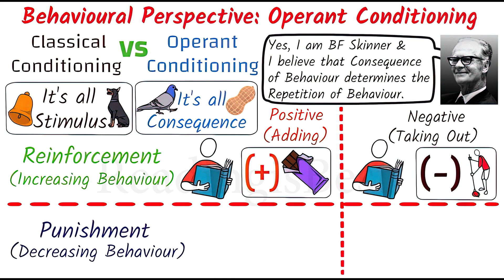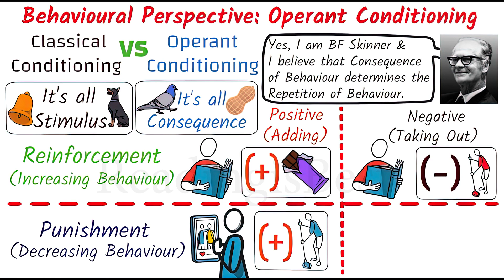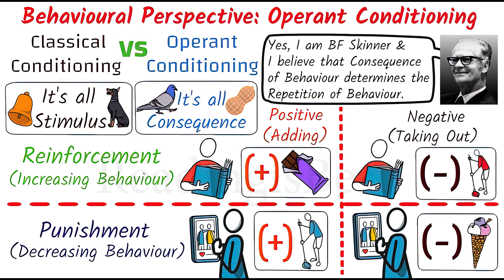When we decrease the likelihood of a behavior by adding an unpleasant consequence, it is called positive punishment. In positive punishment, whenever a person performs unwanted behavior, we add something unpleasant as a consequence.